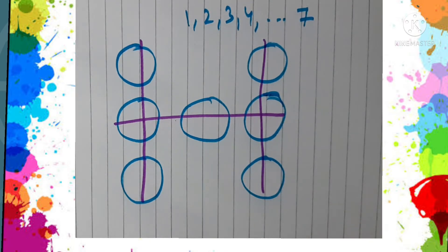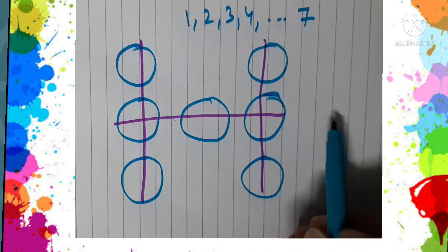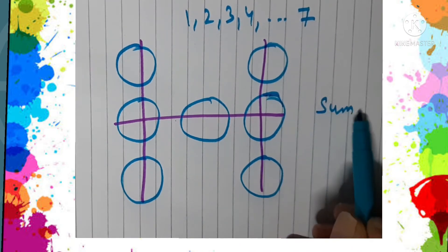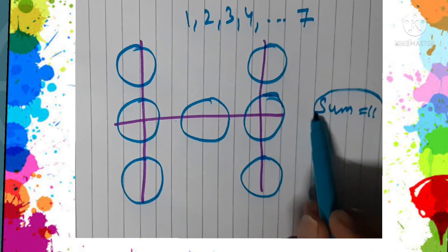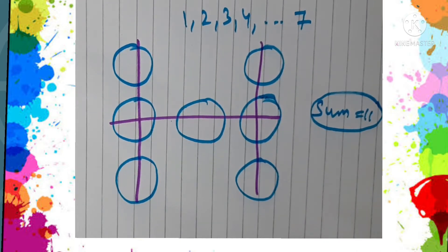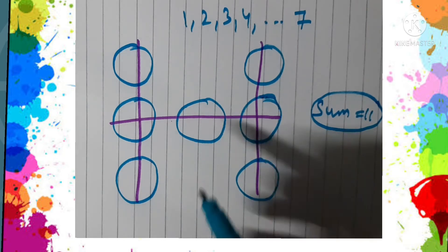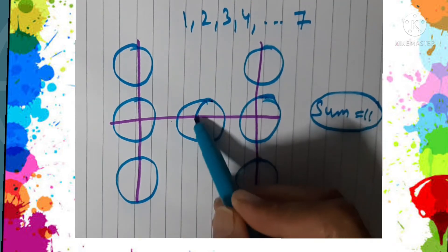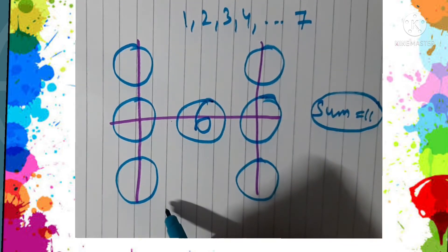Okay, let us see what is the solution. Here we are going to make the sum as 11. You can think of some other sum as well. So if the sum is 11, I'm going to place the number 6 in the center.